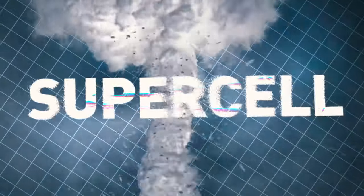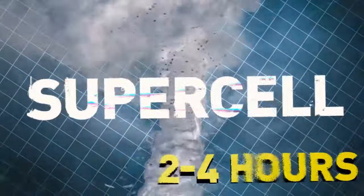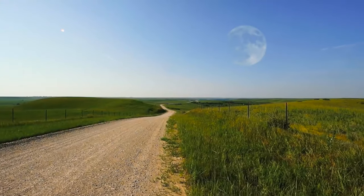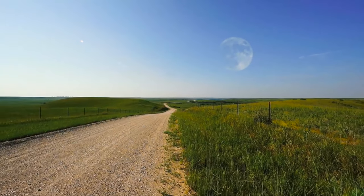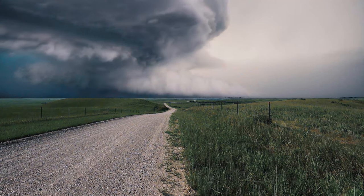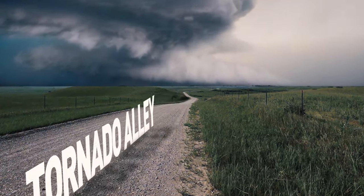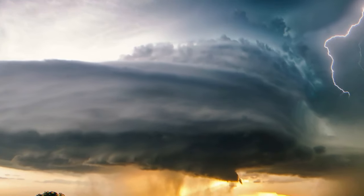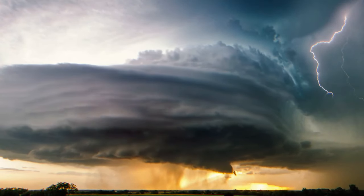Supercells are very common for the great plains of the United States. In particular, the area known as Tornado Alley. But they can occur in other parts of the world too. For example, in Europe, Argentina, Uruguay, and southern Brazil.